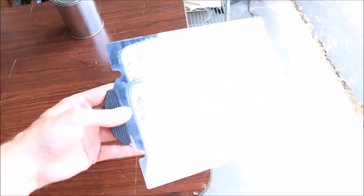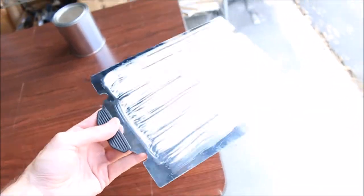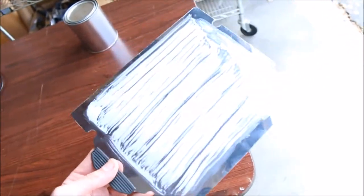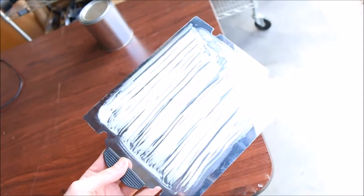So after you've brushed on your ABS juice mixture, you're going to want to let it dry, and it's good to be out in a well-ventilated area or outside while you do this. Once it's dry, you can go ahead and put this on your Make-It printer.